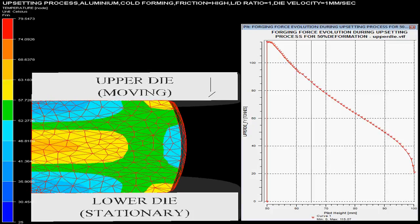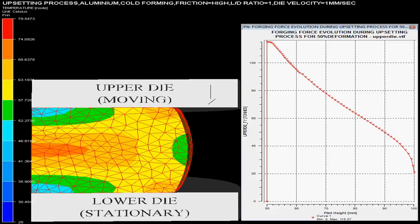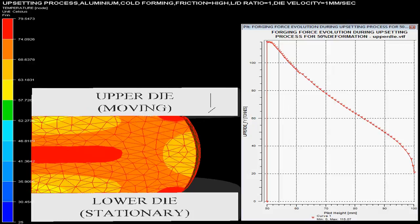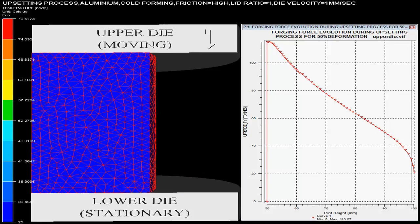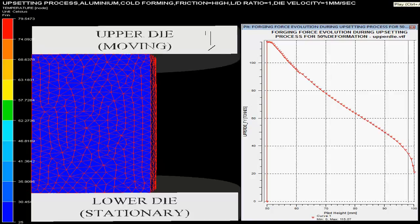High friction for billet and dies is shown on the top end in the video. The upper die presses with the velocity of 1 mm per second with the lower die stationary.